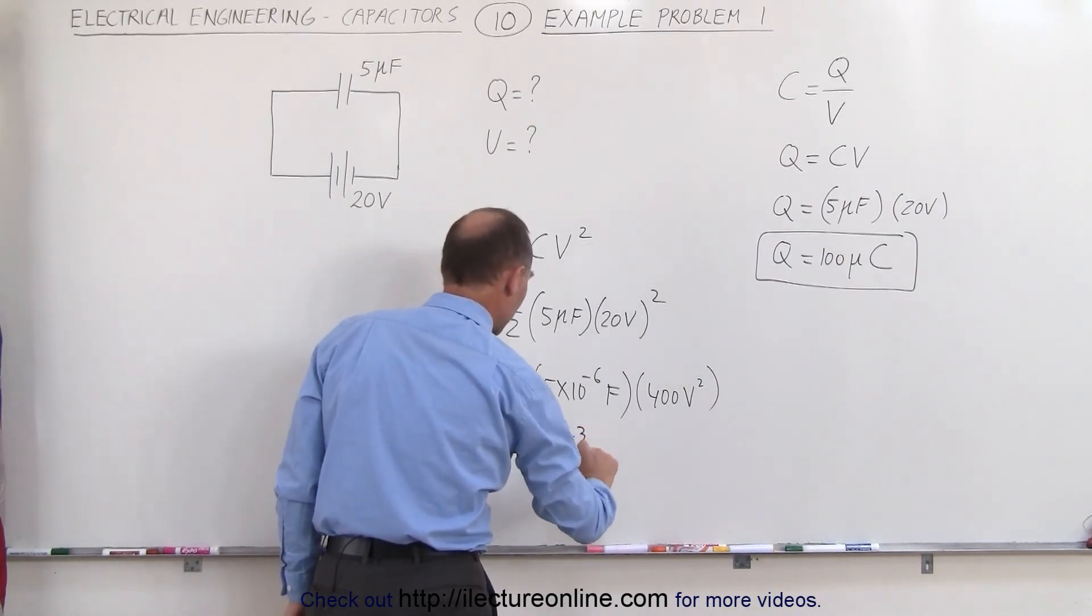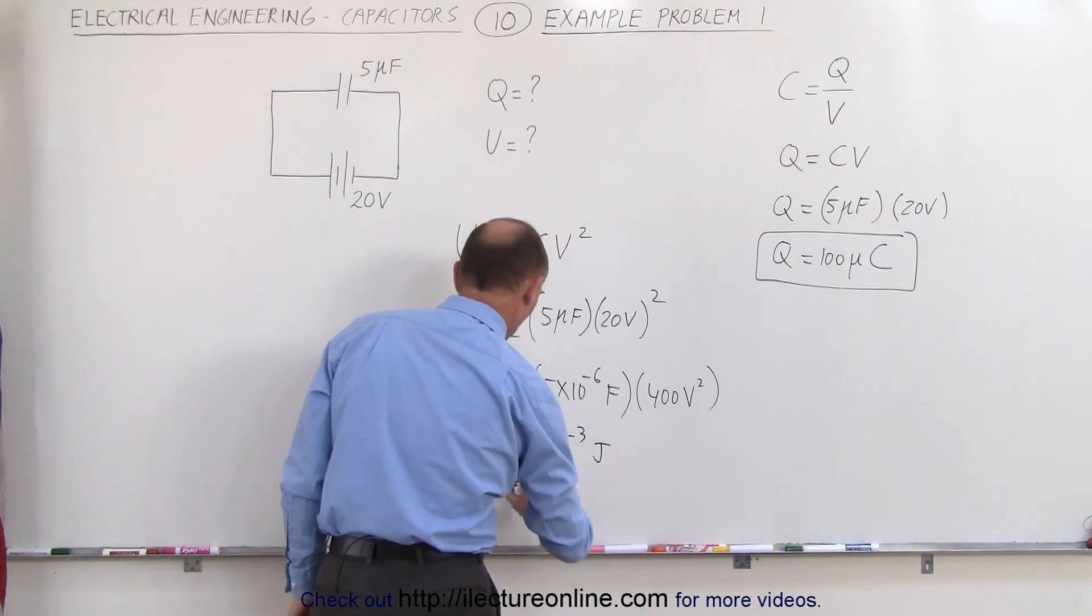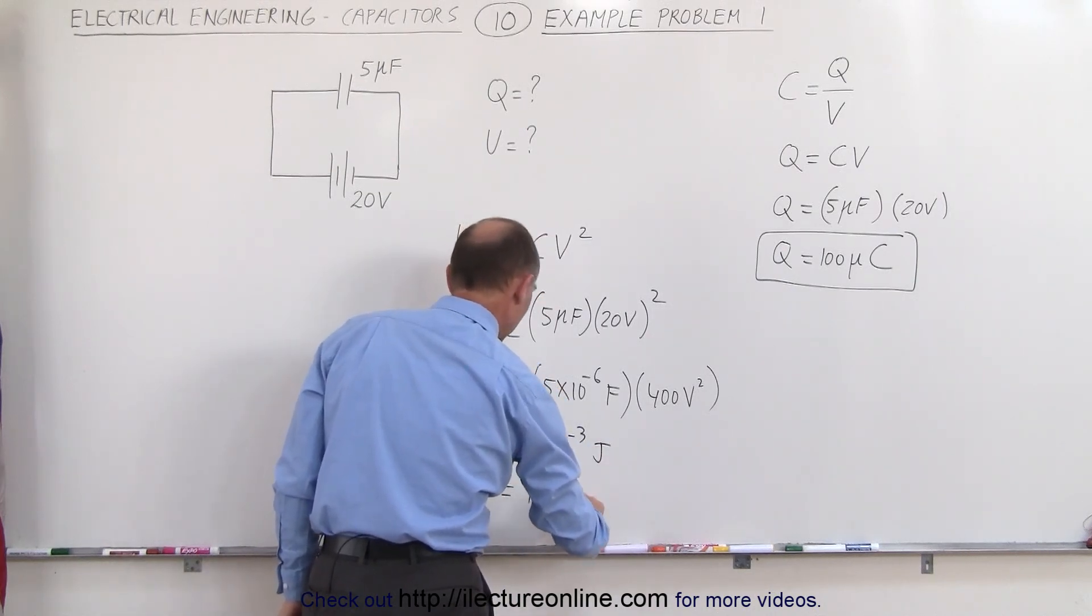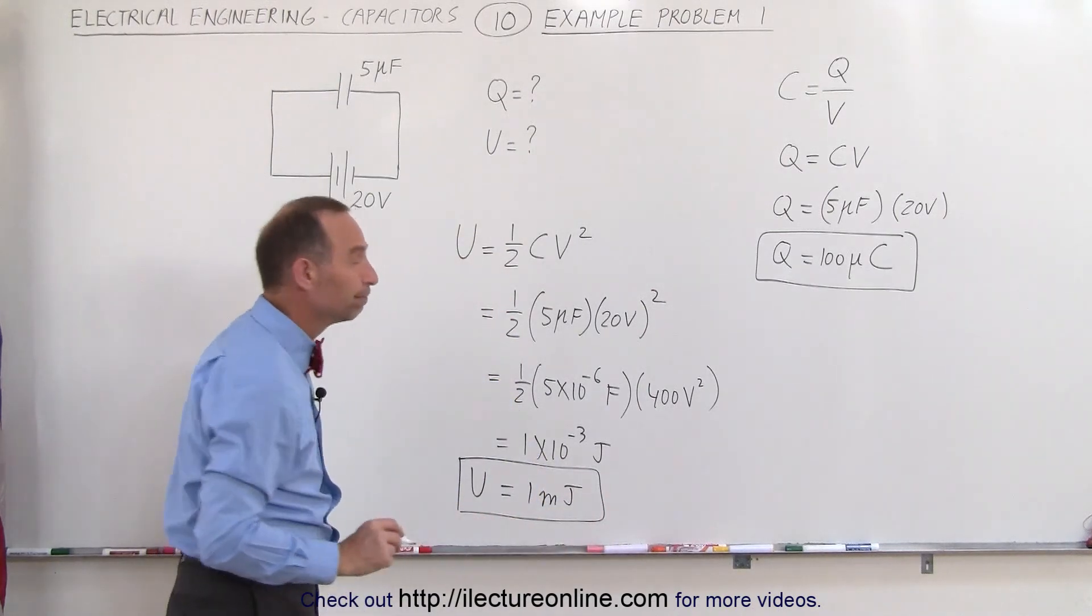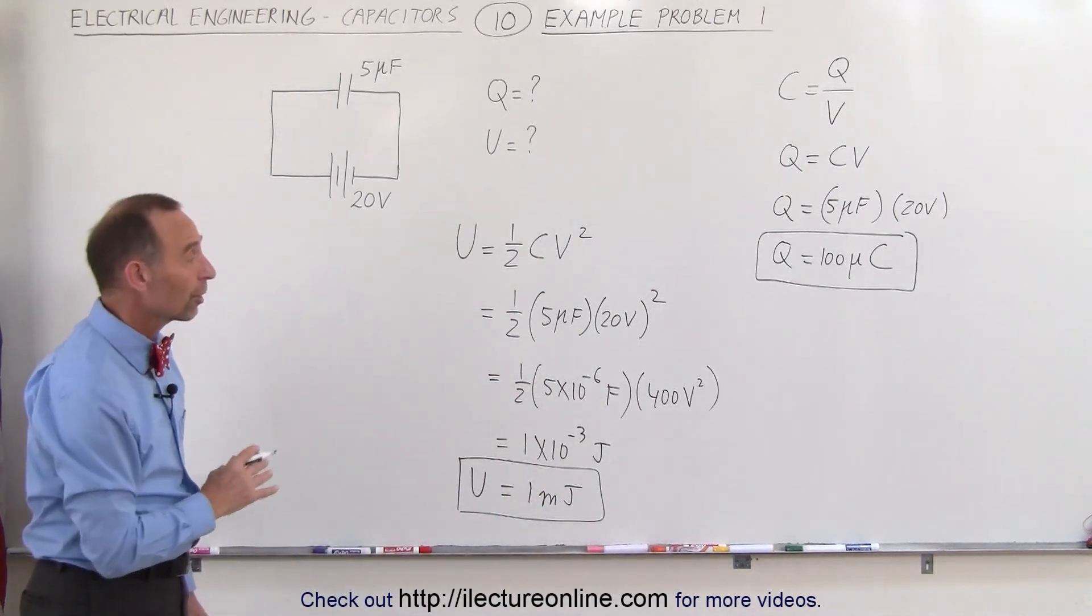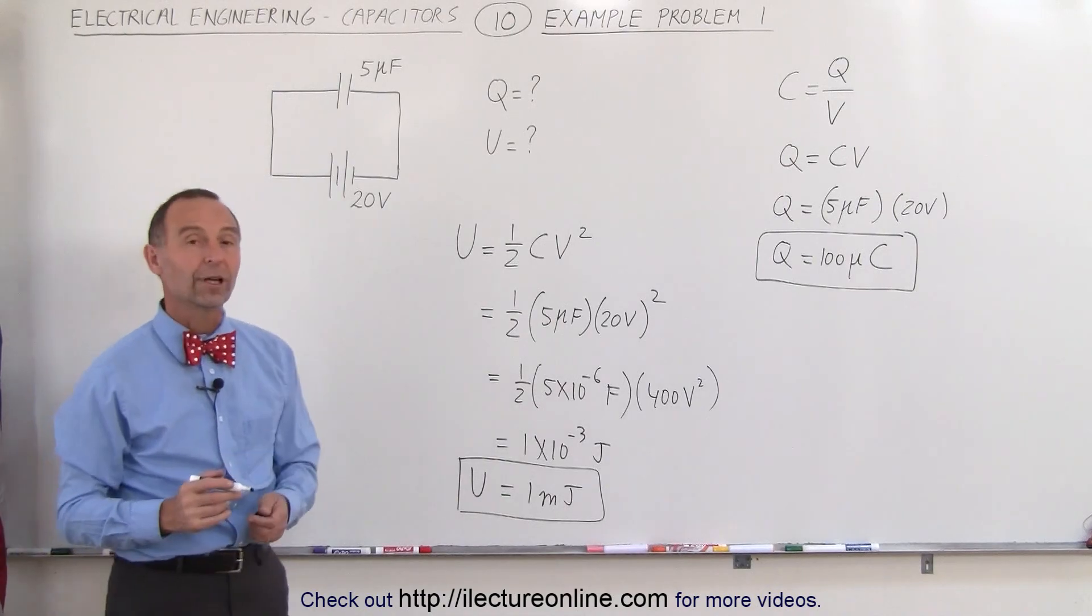1 times 10 to the minus 3. The units would be joules or 1 millijoule. And that would then be the total energy stored on the capacitor. And that's how we find the charge in a capacitor and the energy stored on a capacitor.